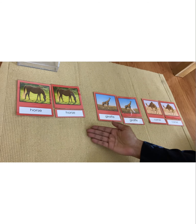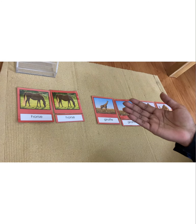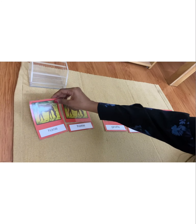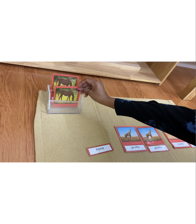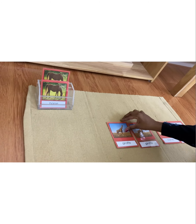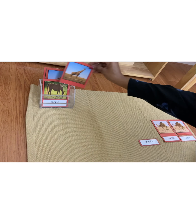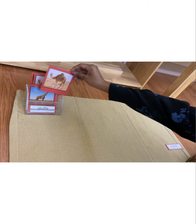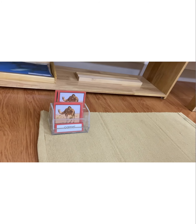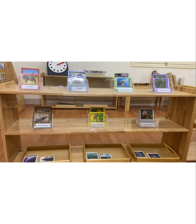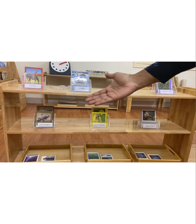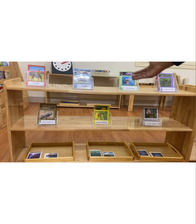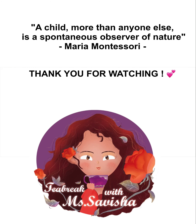Well done, we've matched all of them correctly. Would you like to put them back, starting with the control card, then the picture card, and then the name slip. You can use these presentations to work with the rest of the three-part cards — they all have a similar presentation but different categories of cards. Thank you.